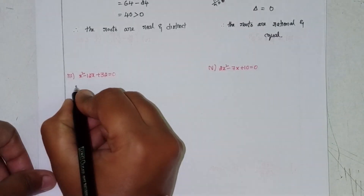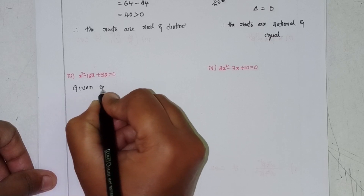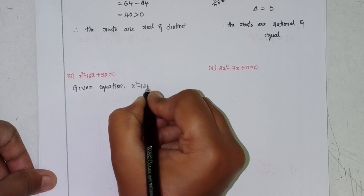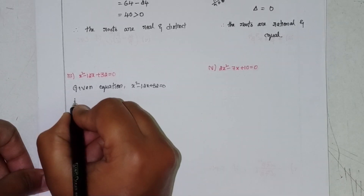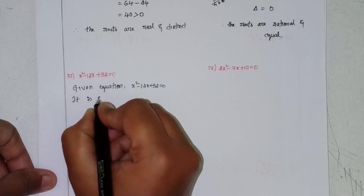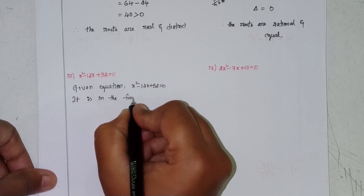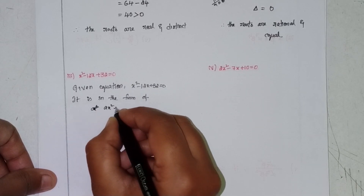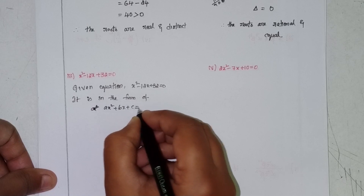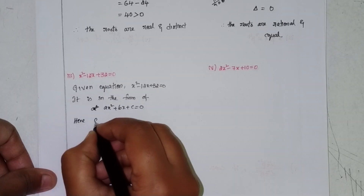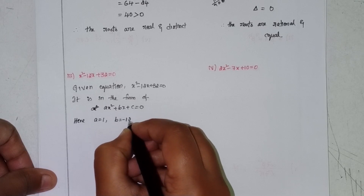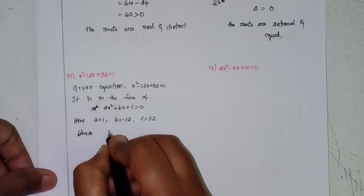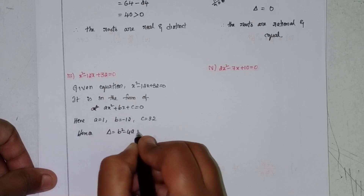Next, given equation: x² - 12x + 32 = 0. It is in the form of ax² + bx + c = 0, where a = 1, b = -12, and c = 32. Hence, discriminant delta equals b² - 4ac.